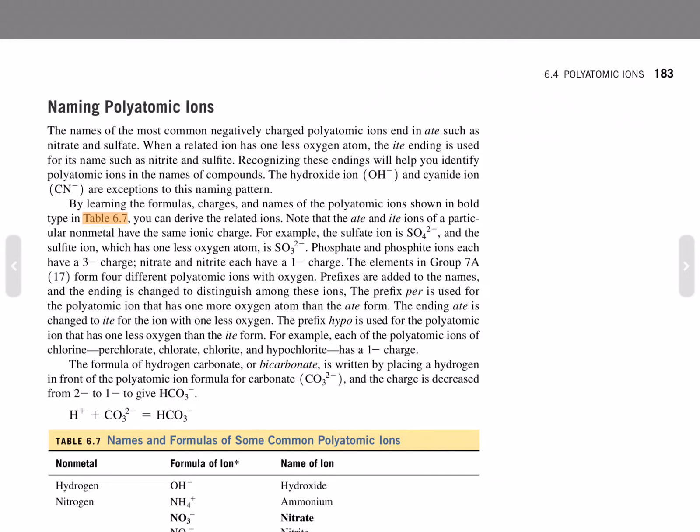Naming Polyatomic Ions. The names of the most common negatively charged polyatomic ions end in -ate, such as nitrate and sulfate. When a related ion has one less oxygen atom, the -ite ending is used for its name, such as nitrite and sulfite. Recognizing these endings will help you identify polyatomic ions in the names of compounds. The hydroxide ion and the cyanide ion are exceptions to this naming pattern.